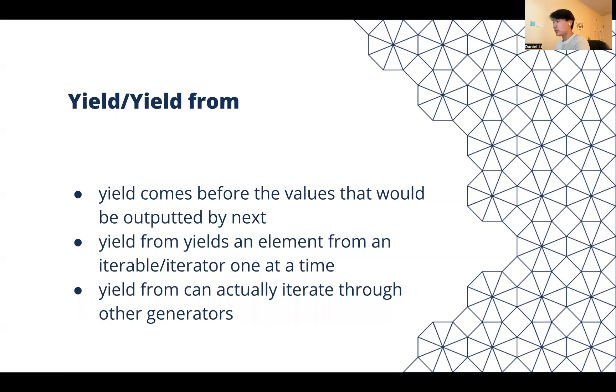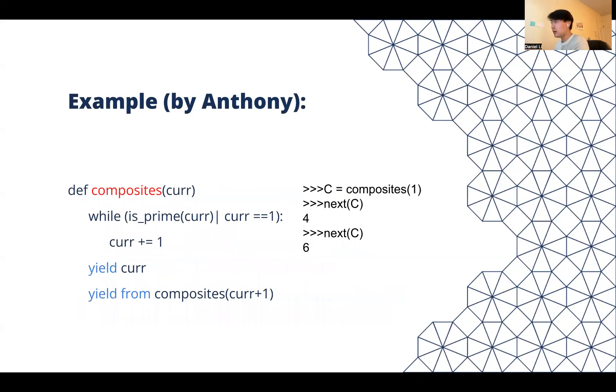Two keywords with generators are yield and yield from. Yield is used to pause the function's execution and produce a value. This can be retrieved using next. Yield from is more powerful because it allows you to yield elements from an iterable or iterator one at a time. This will be more clear with an example I have.